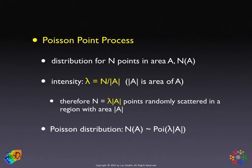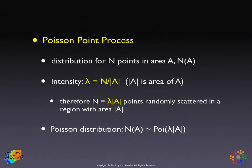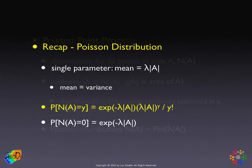For example, if your intensity is 5 points per square kilometer and you have 1 square kilometer, then you can expect 5 points. If you have 2 square kilometers, you can expect 10 points. Formally then, the number of points in a given area is modeled as a Poisson distribution with mean lambda times the area A.